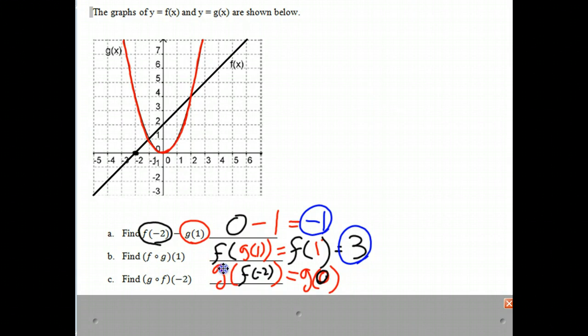And g(0), we simply look when x is 0, what is the value of g? And you might notice that it's right there at the origin. So when x is 0, y is 0. So g(0) becomes 0, and that is our answer.